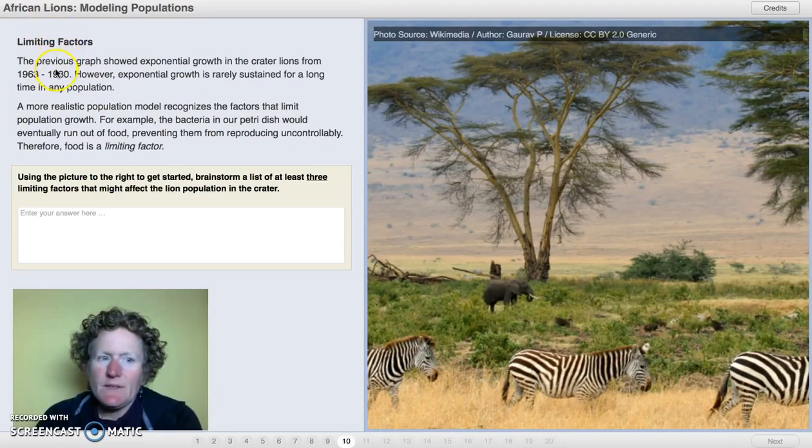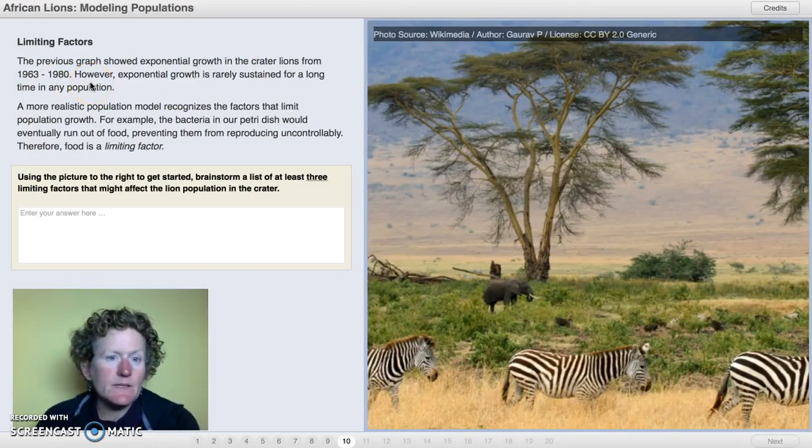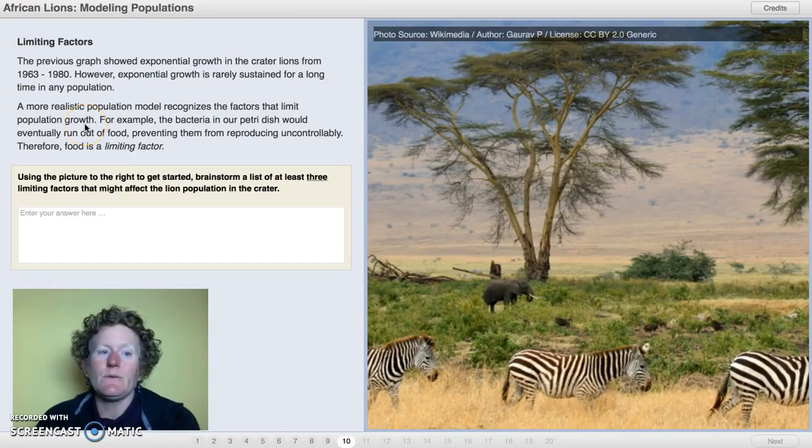Limiting factors. The previous graph showed exponential growth in the crater lions from 1963 to 1980. However, exponential growth is rarely sustained for a long time in any population. A more realistic population model recognizes the factors that limit population growth. For example, the bacteria in our petri dish would eventually run out of food, preventing them from reproducing uncontrollably. Therefore, food is a limiting factor.